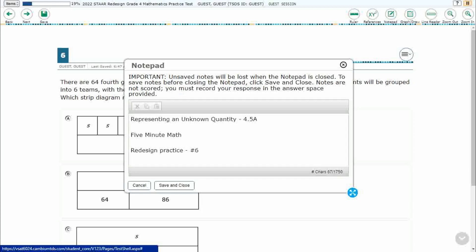Hello and welcome to 5-Minute Math. Today we are looking at the fourth grade concept of representing an unknown quantity. This is standard 4.5A in the great state of Texas and we are using item number six of the Redesign Practice Online Start Test.